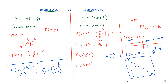To summarize the differences: in the binomial distribution, the mean is np. In the geometric distribution, the mean is 1/p. These are the key distinctions between the binomial and geometric distributions.